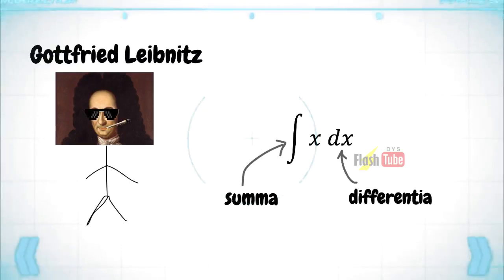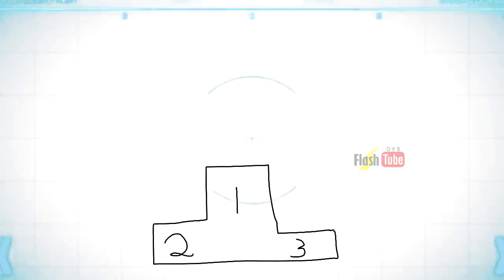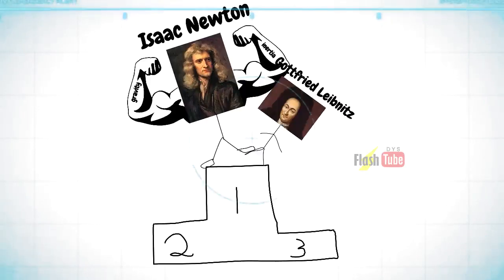So who took the credit for calculus? Newton conceived his ideas in the 1660s, while Leibniz came to similar conclusions a decade later. But Leibniz published his findings nearly a decade before Newton. Well, initially it was Newton, but after their deaths, both were attributed the title Inventors of Calculus.